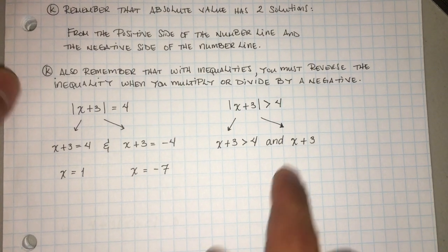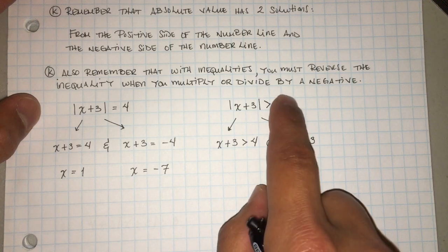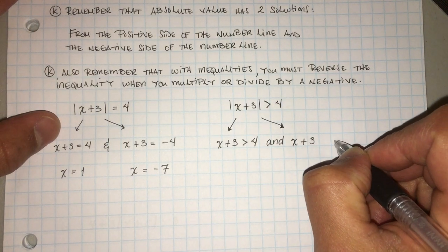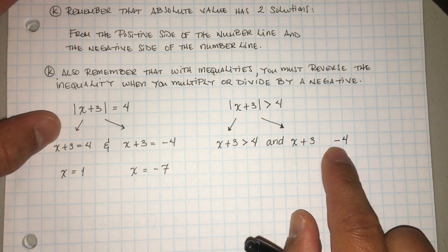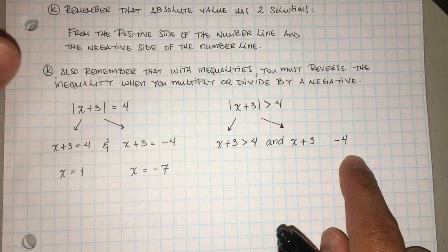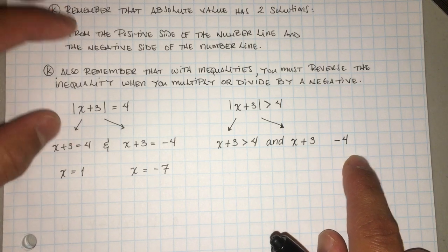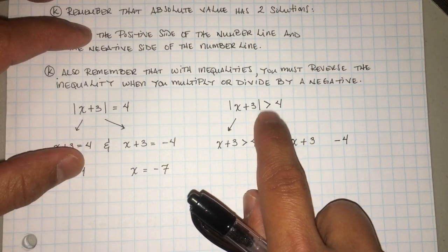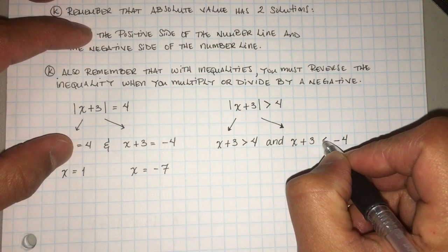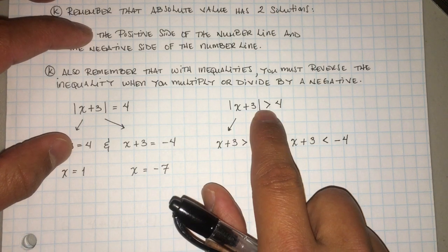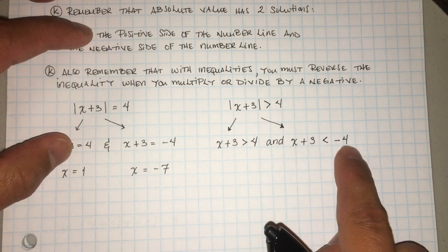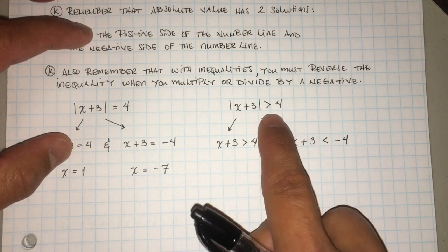Cuando vamos acá, tenemos el positivo y después también tenemos el negativo. We're also going to have the negative 4 over here. So in essence, how did the 4 become a negative 4? Well, you multiplied it by negative 1 because it's on the other side of the number line. So what happens is you have to reverse this inequality — tienen que cambiar la dirección. So it's going to be less than. So you have your two solutions, the positive and then the negative. But when you have the negative, you have to reverse the inequality.